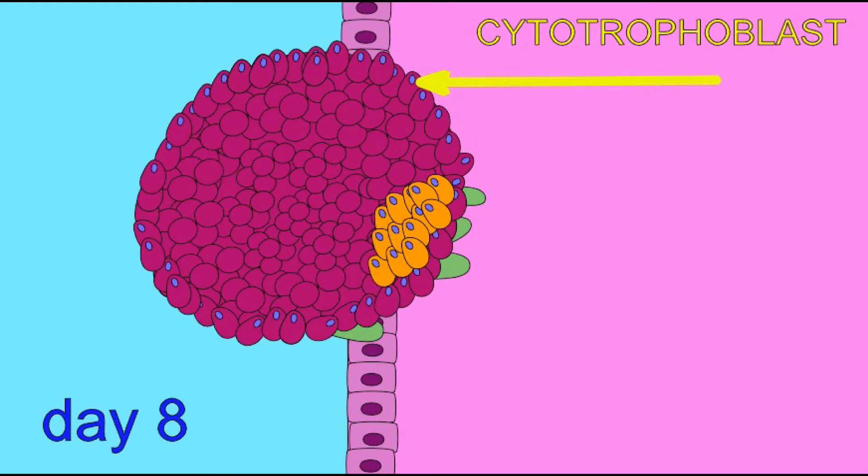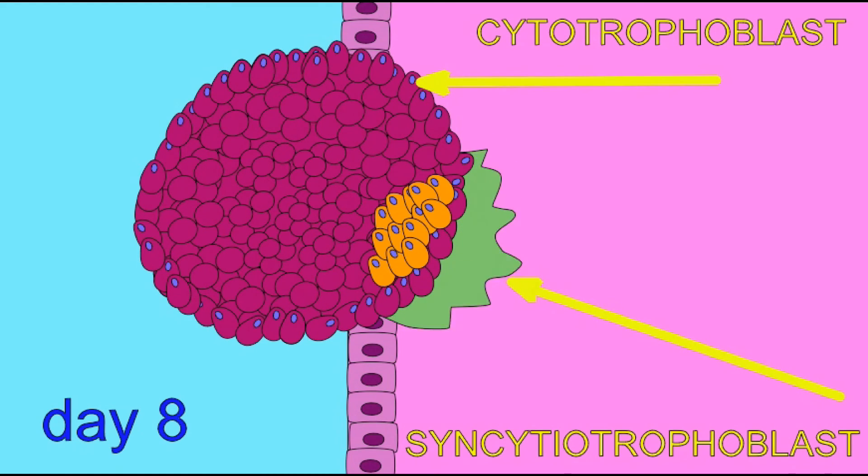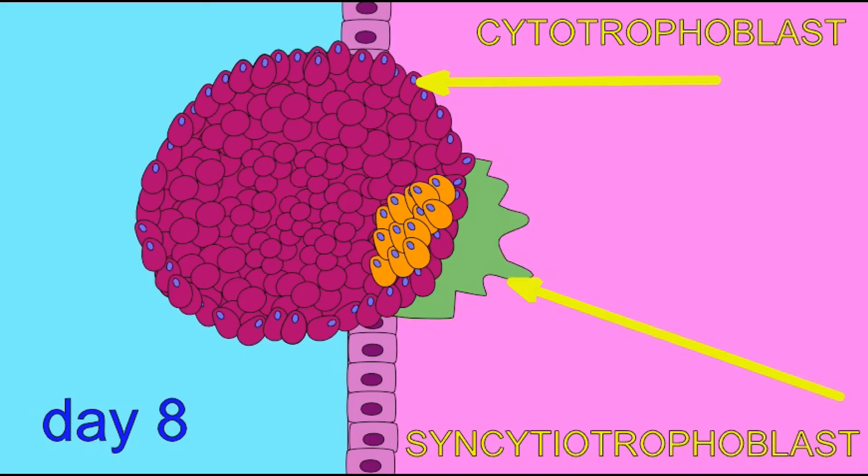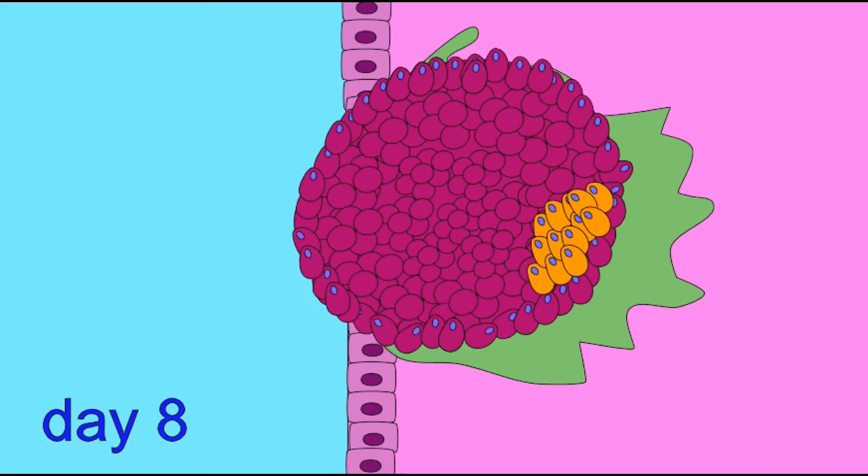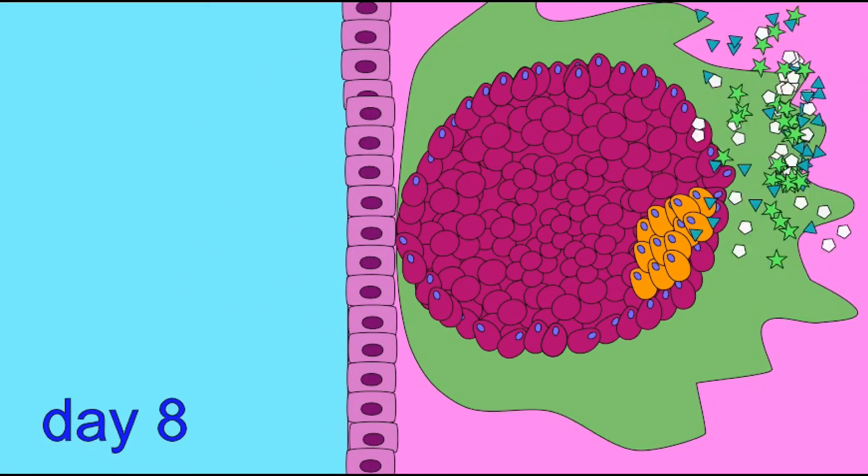In humans, endoreplication occurs in megakaryocytes and also in cells of the early embryo, known as the trophoblast.